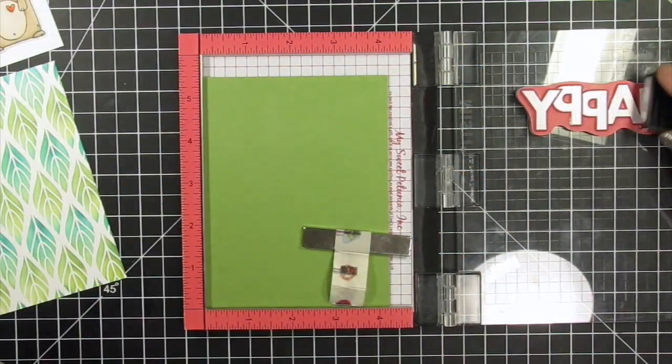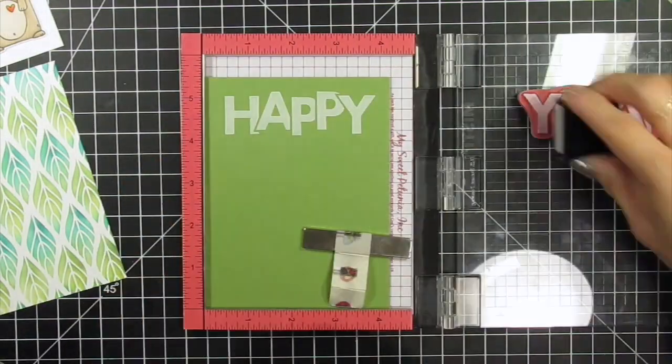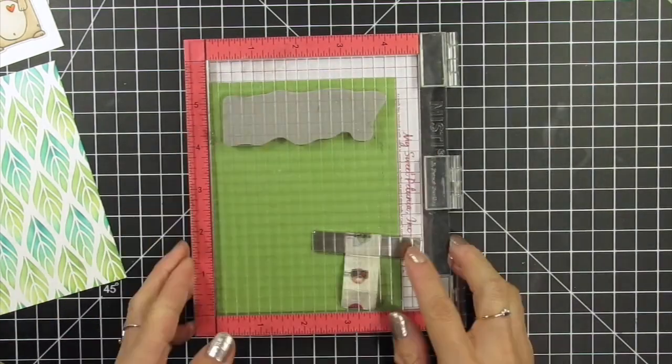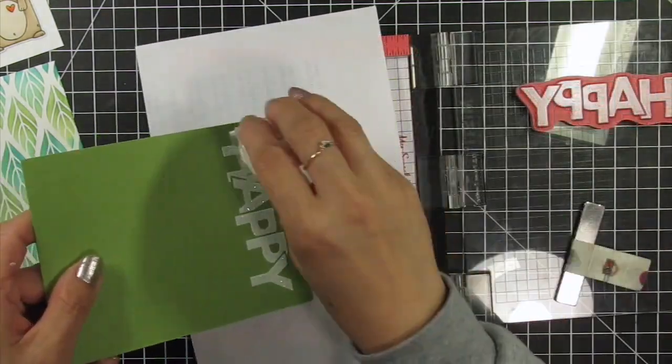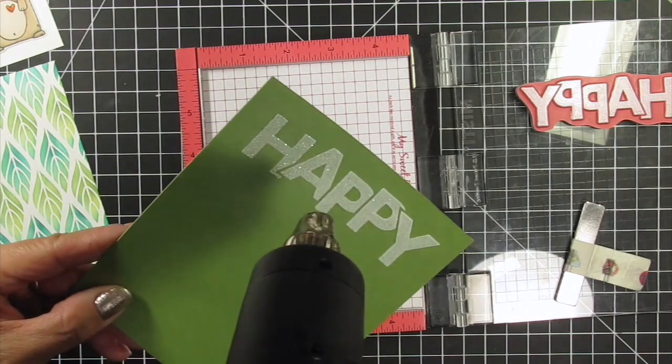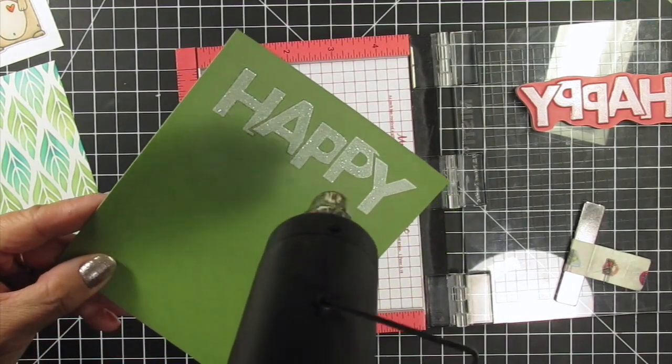For the second card, I won't be using any images and let the sentiment and the stencil shine. I'm going to stamp On the Block Happy on Pea Pod cardstock with Sugar Cube pigment ink and heat emboss it with clear sparkle embossing powder.